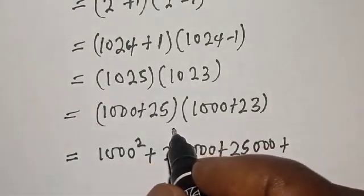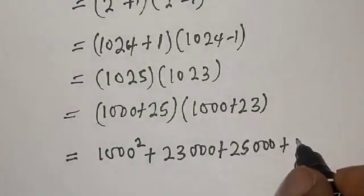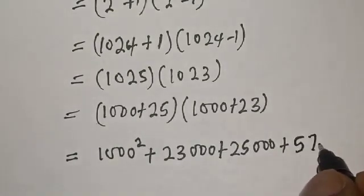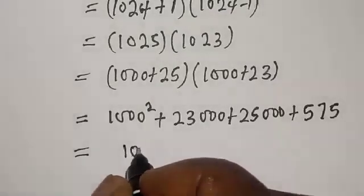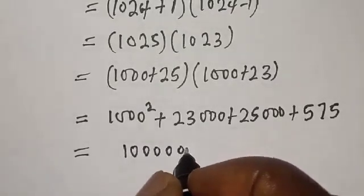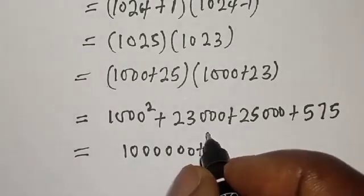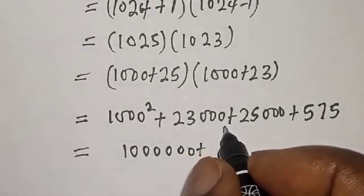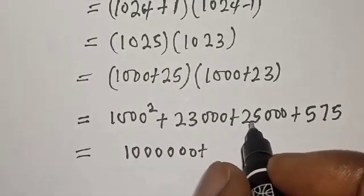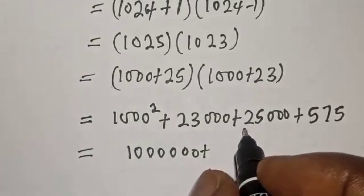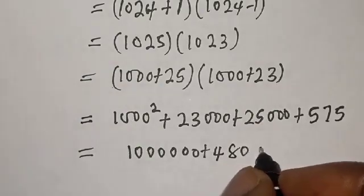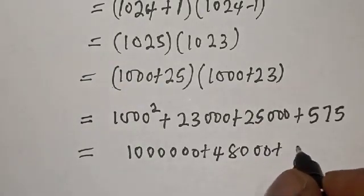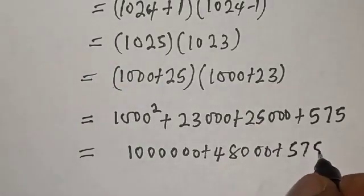23 times 25, which is 575. So we have 1,000,000 plus 23,000 plus 25,000, which is 48,000, plus 575.